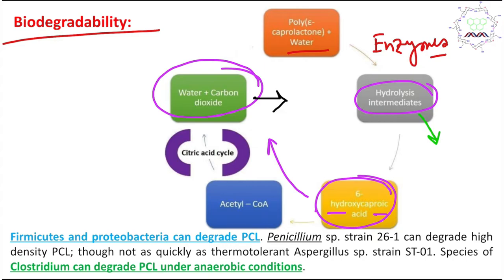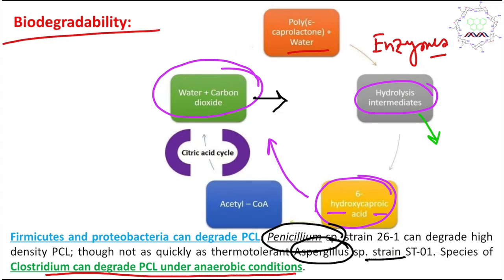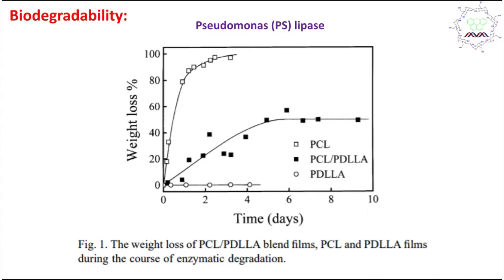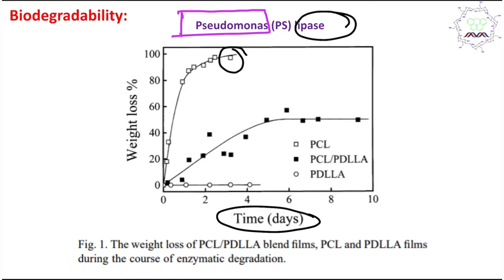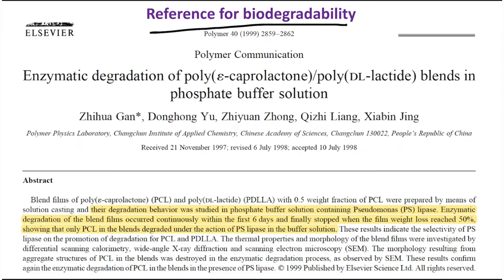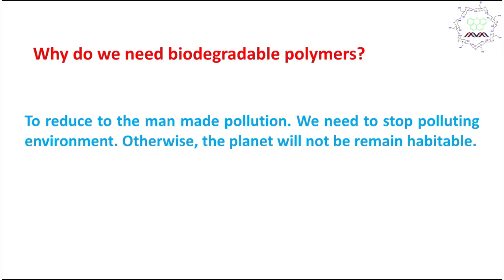Several bacterial species can degrade PCL: Penicillium, Aspergillus, and Clostridium can degrade PCL even under anaerobic conditions. A real-time example: Pseudomonas species uses the enzyme lipase and can degrade nearly 100% of the polymer within four days. This confirms the biodegradability of PCL with literature-supported evidence.